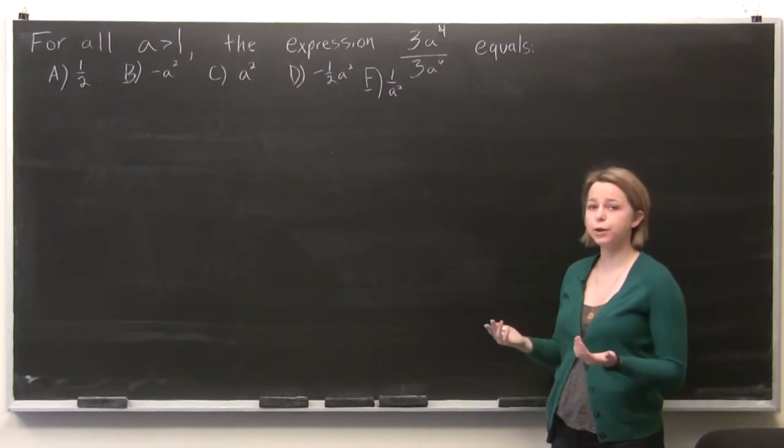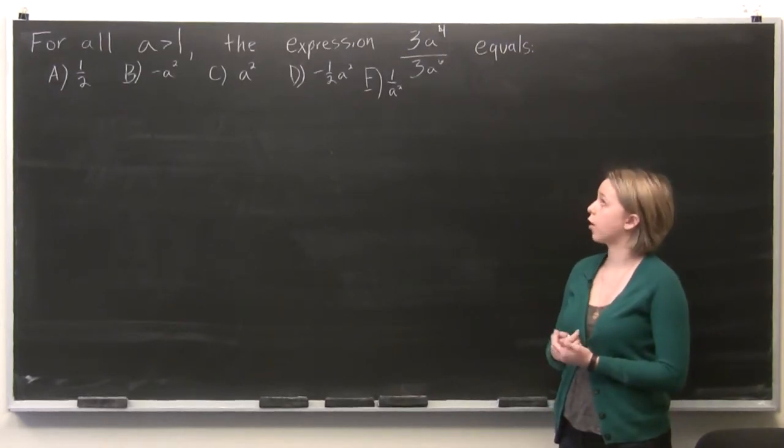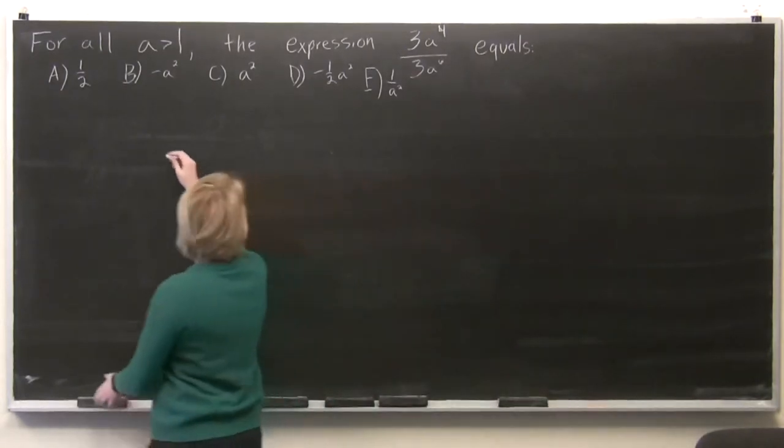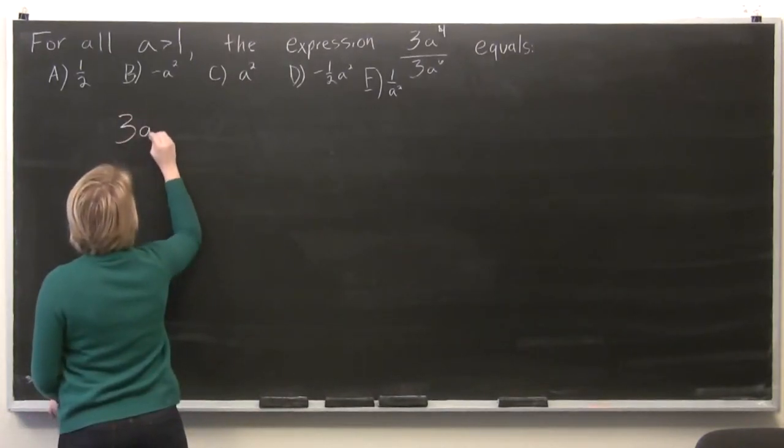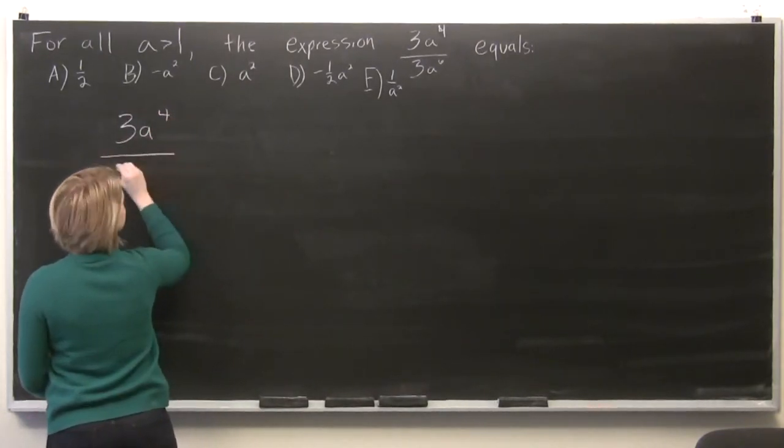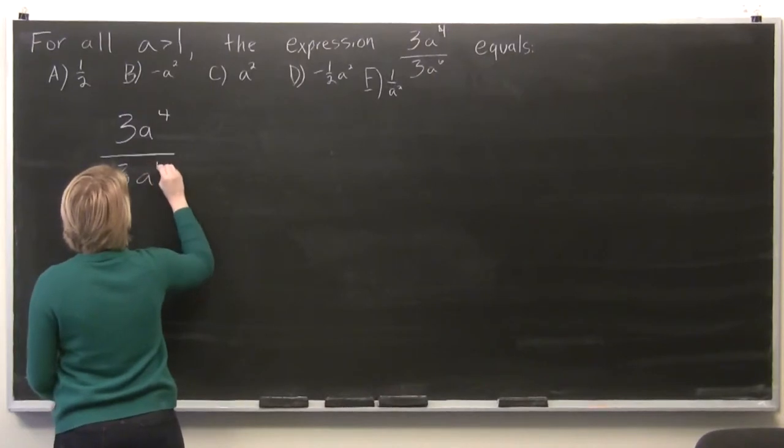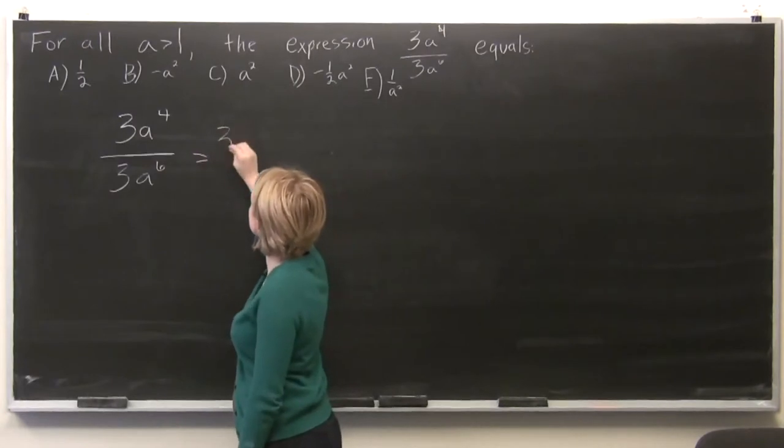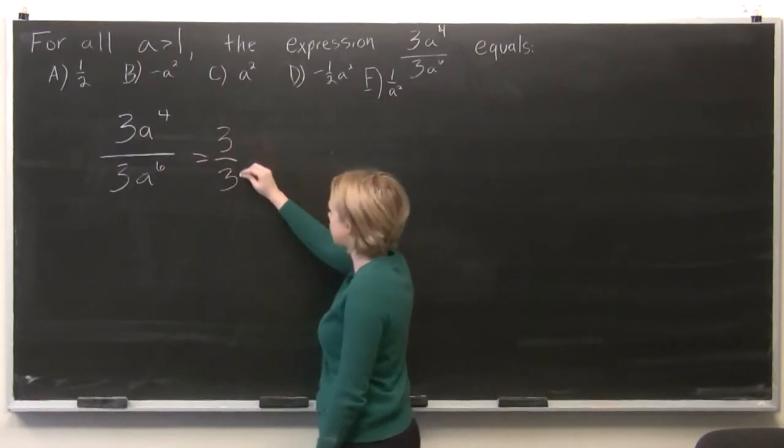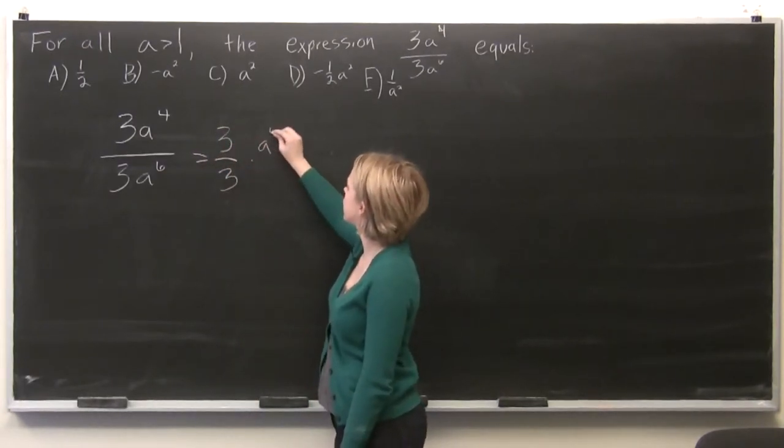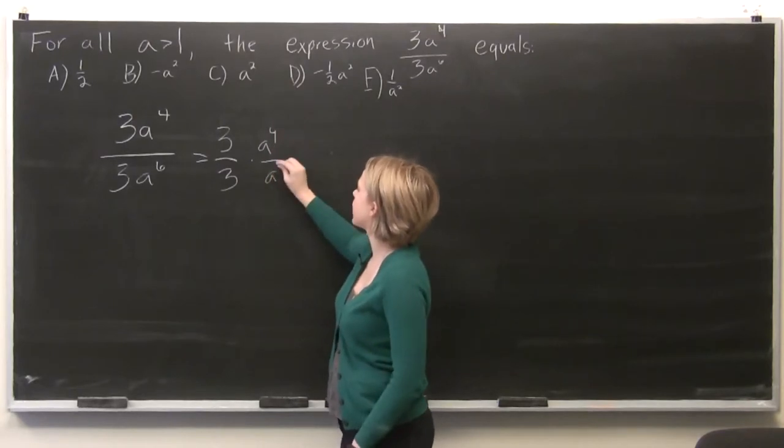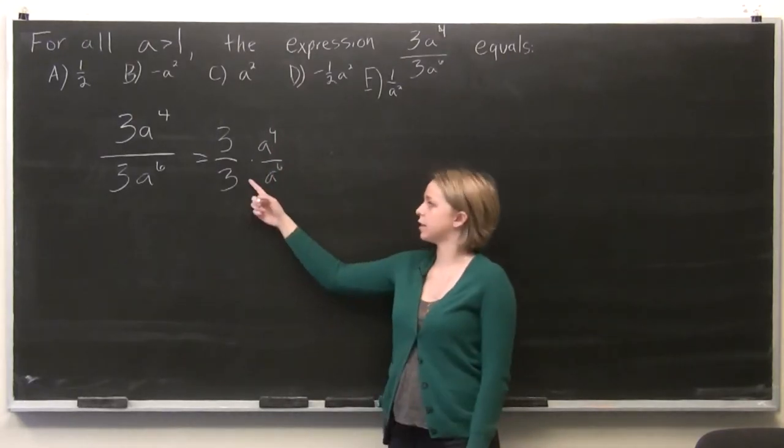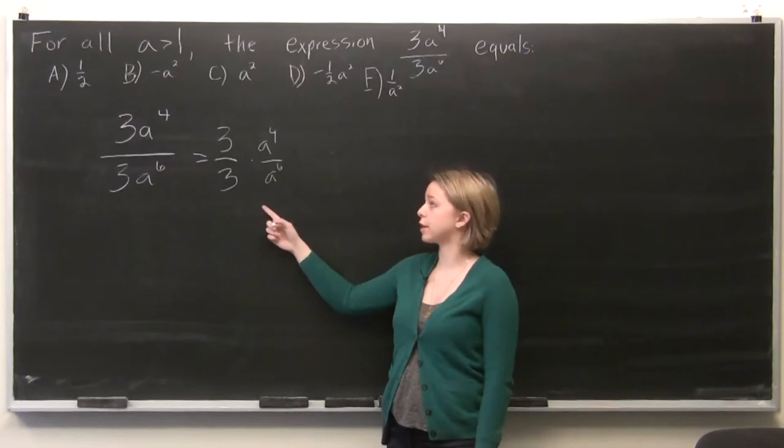So in order to solve this, let's rewrite our fraction. We know that this fraction is equal to 3 over 3 times a to the 4th over a to the 6th. And because 3 over 3 makes 1,